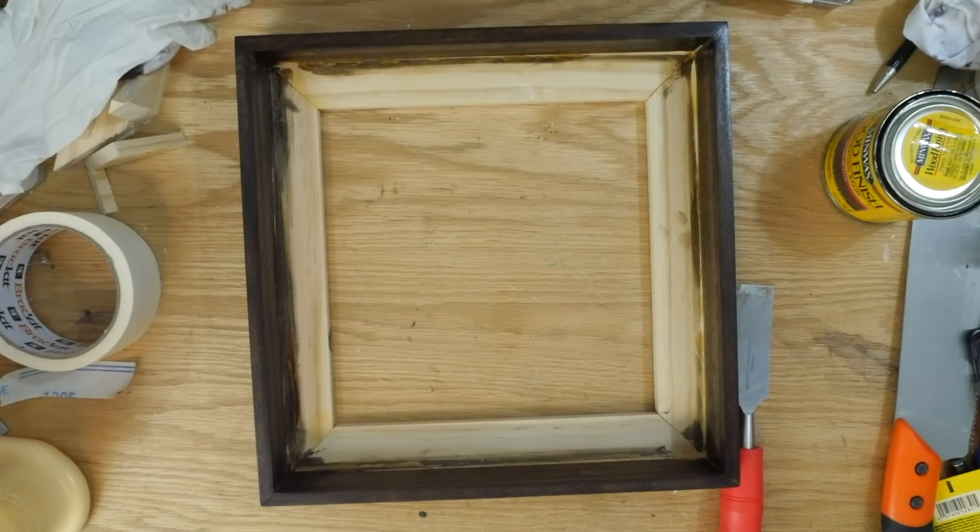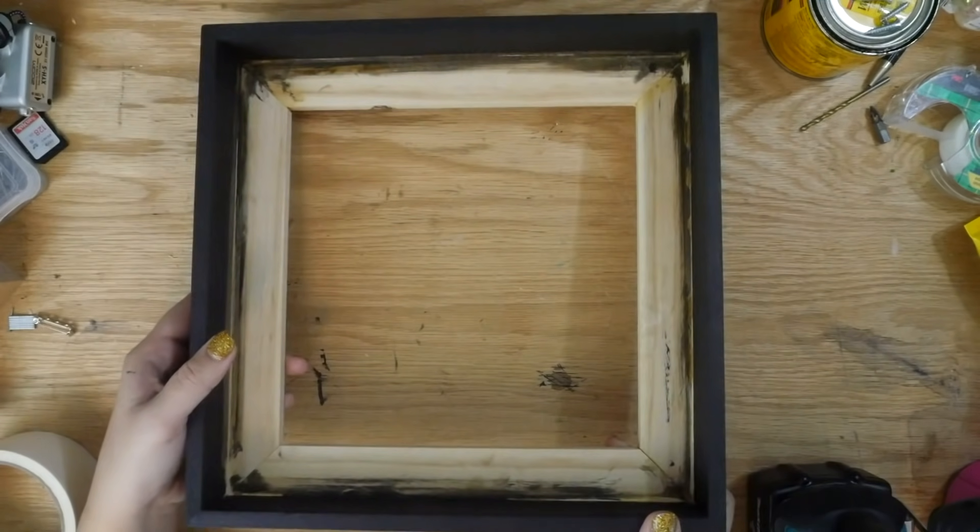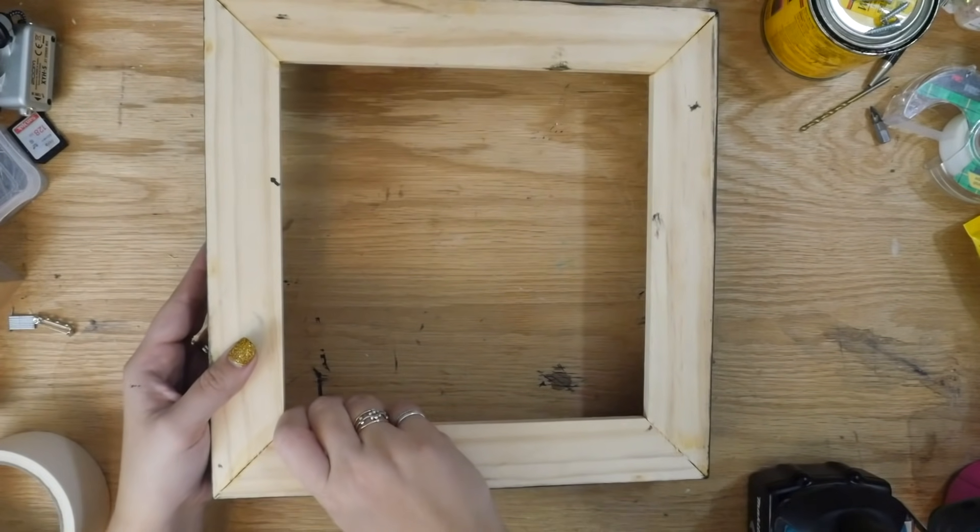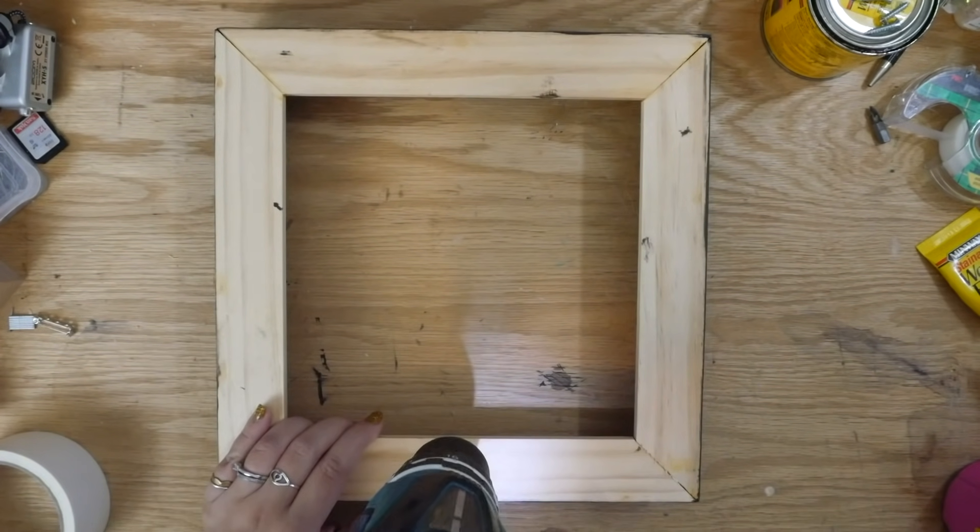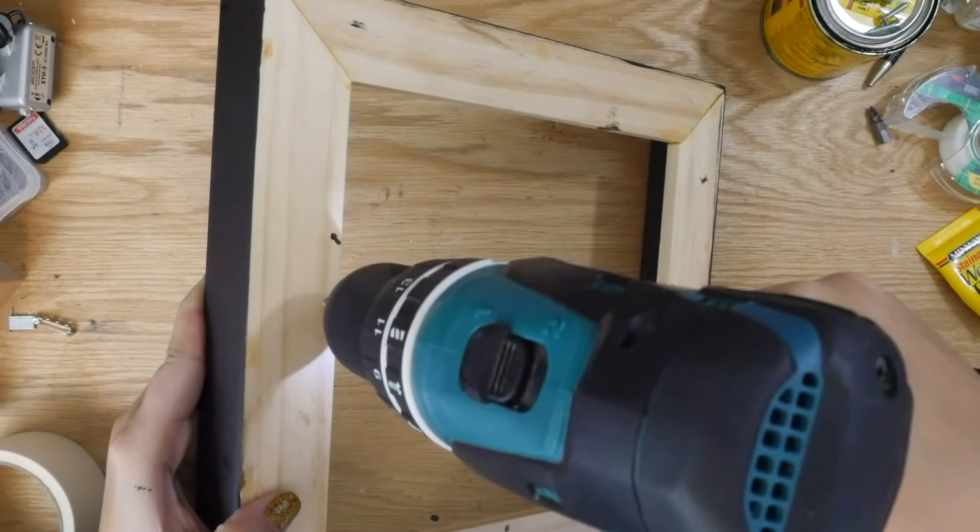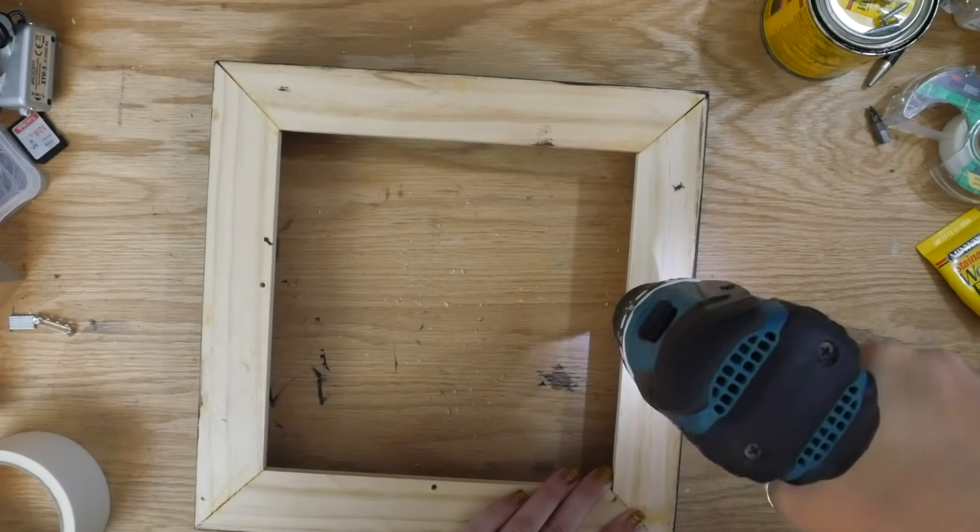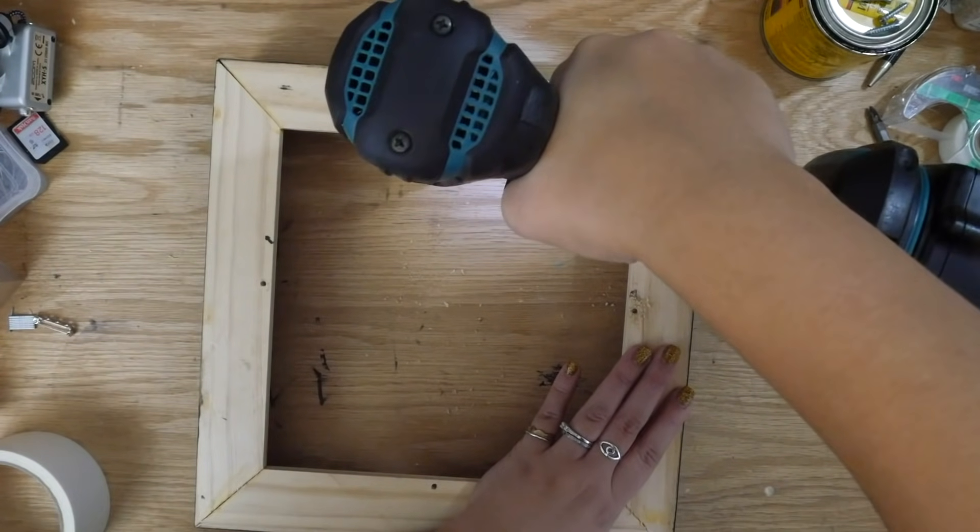Oh, and make sure you stain or paint the bottom face of this too, because part of it will be visible through the gap between the frame and the painting. Anyway, when that's all dry, flip it over and then drill at least one pilot hole on each side of the frame. You may want to fit the canvas in first to see where to drill the holes.